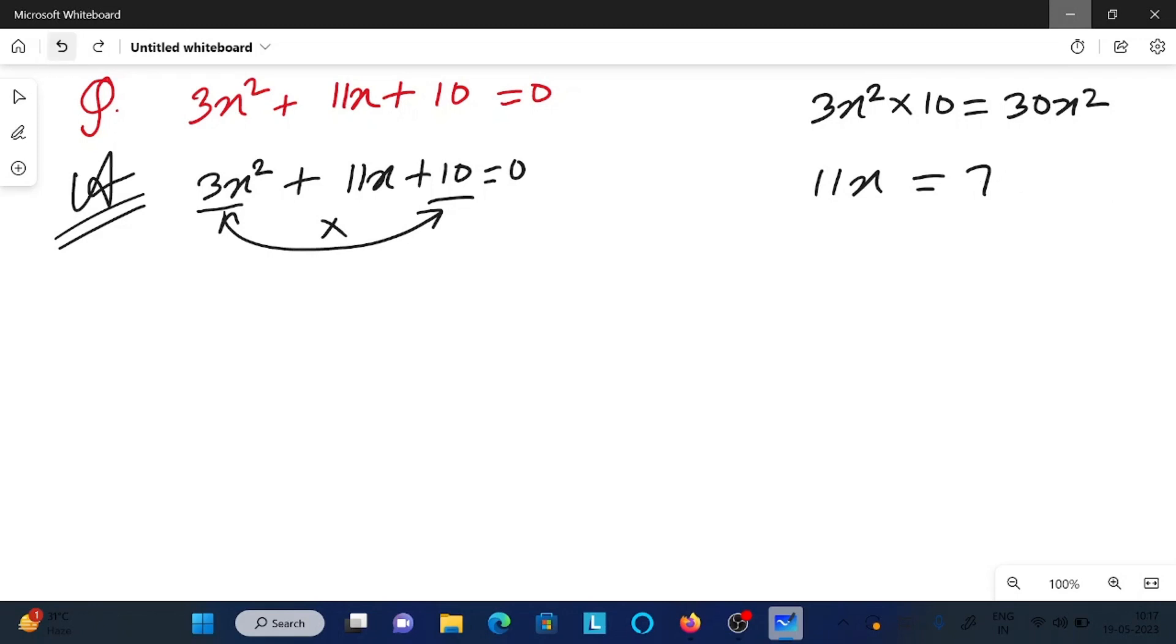We can also write this as 8x plus 3x. When I multiply 8x into 3x, that's 24x square, and both are not equal. So next we can write 6x plus 5x. When you add this is equal to 11x, and when you multiply 6x into 5x, this equals 30x square. Both are equal.